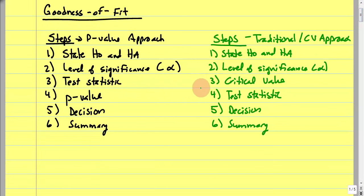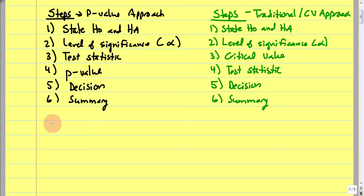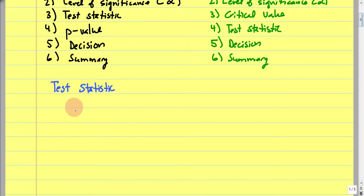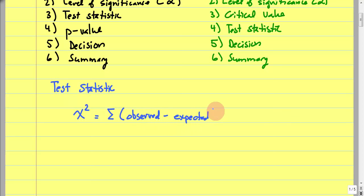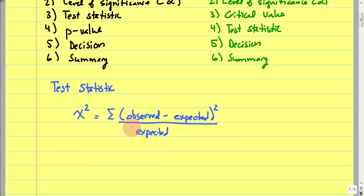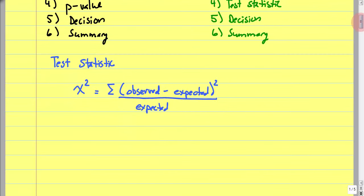One thing both approaches have in common is the test statistic. For this particular test, our test statistic is a chi-square test. Chi-squared is equal to the sum of the observed values minus the expected values, squared, divided by expected — for each of the possible outcomes. So you take observed minus expected, square it, divide by expected, and add them all up. This is our test statistic.